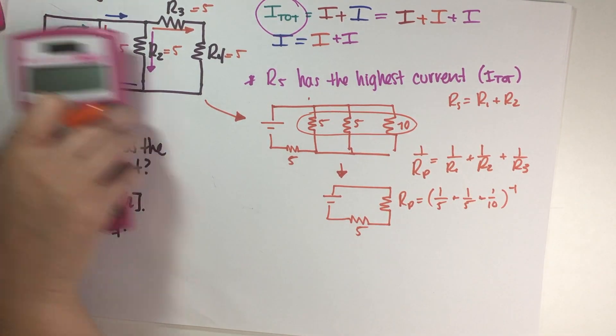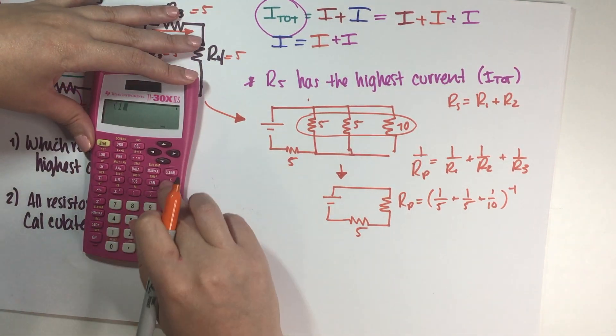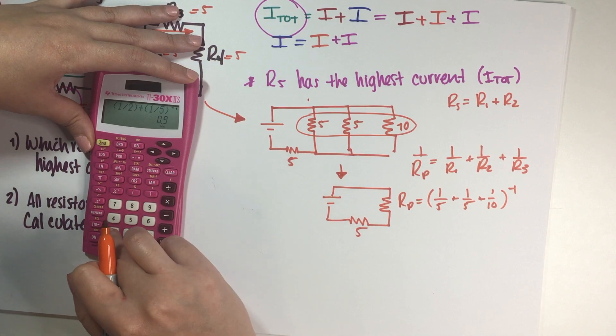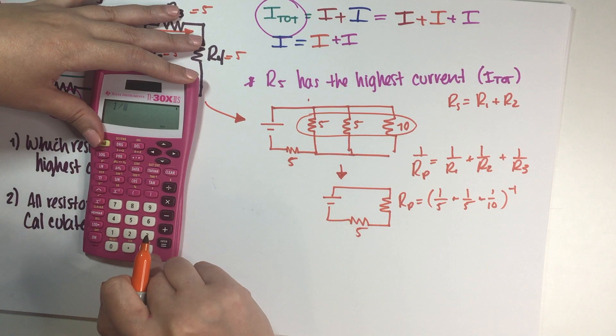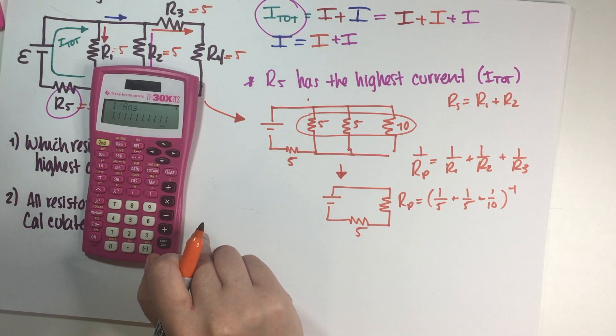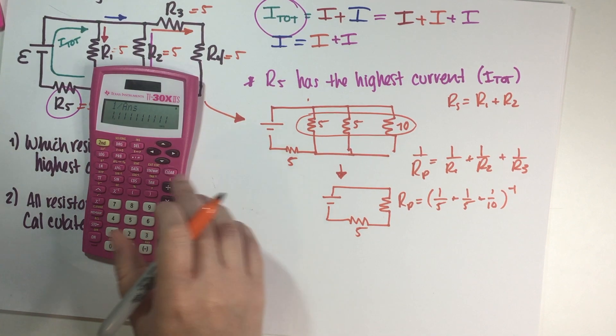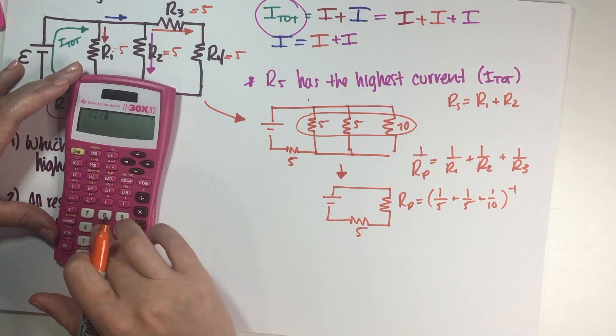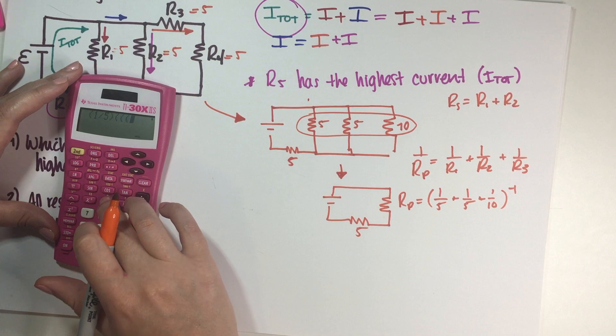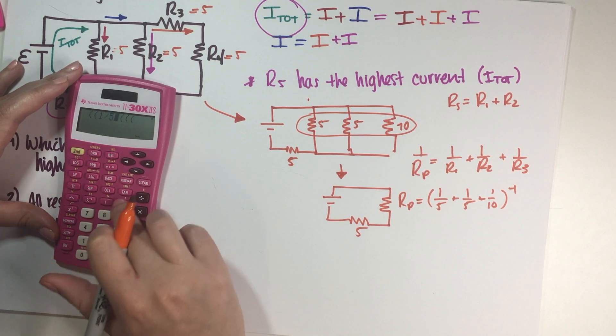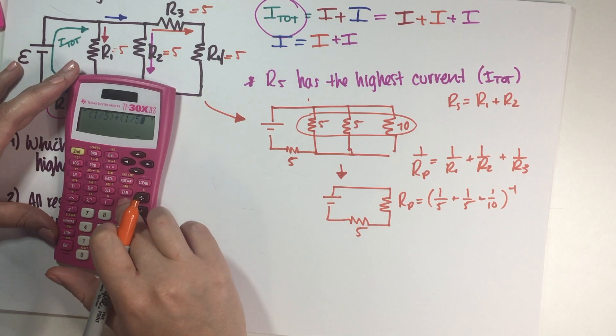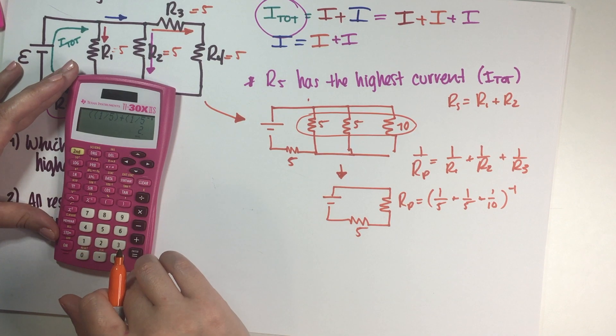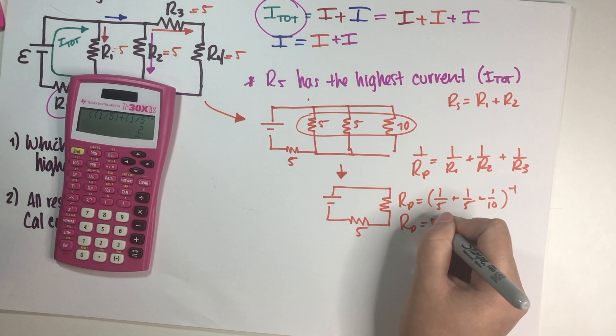So in this case, it's one-fifth plus one-fifth plus one over ten, to the negative one. That gives us 2 ohms.